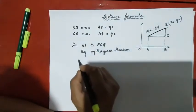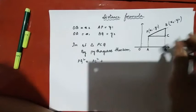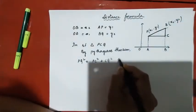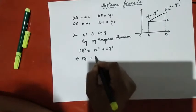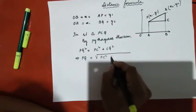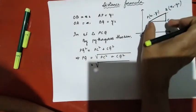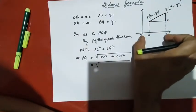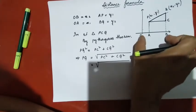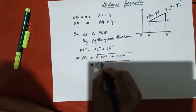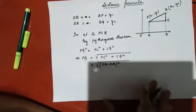PQ squared is equal to PC squared plus CQ squared. So PQ is equal to the square root of PC squared plus CQ squared. This is PQ, which is equal to OB minus OA whole square plus CQ.